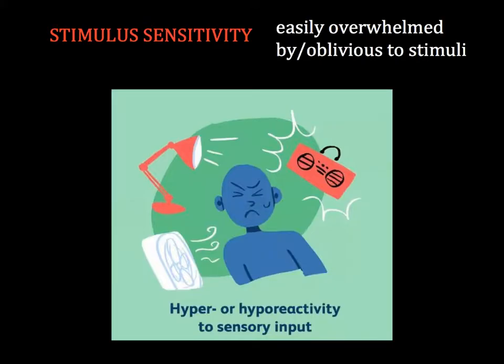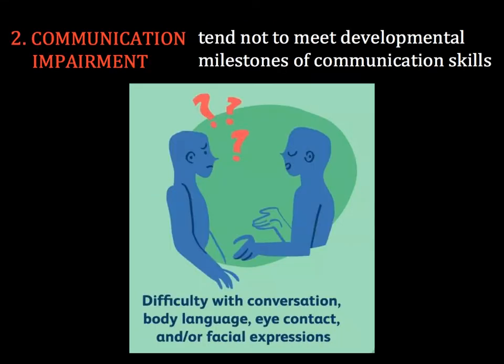People with ASD often experience stimulus sensitivity, meaning they are either overwhelmed by or oblivious to sensory input. For instance, someone with autism might refuse to wear certain fabrics because that fabric hurts or scratches their skin, or avoid very loud and chaotic environments because their brains cannot process all of that noise easily. These sensory issues can result in significant communication impairment — people with autism often avoid eye contact, or look and listen less to those around them, and thus may fail to respond even when someone is calling their name.